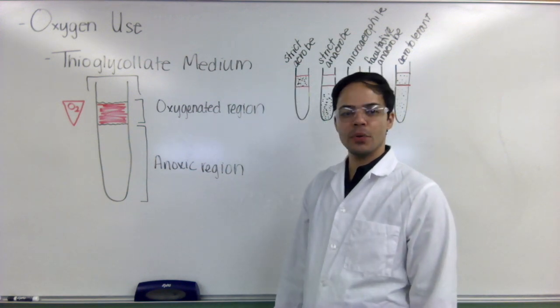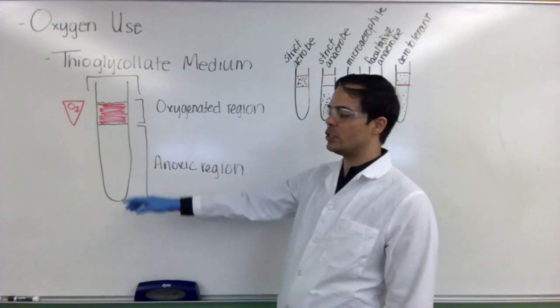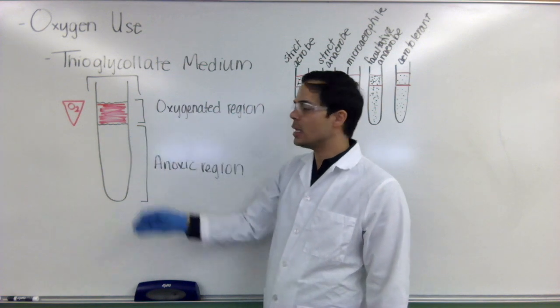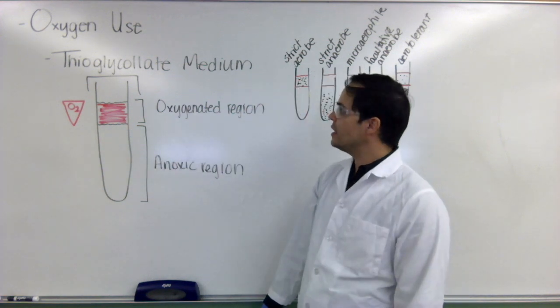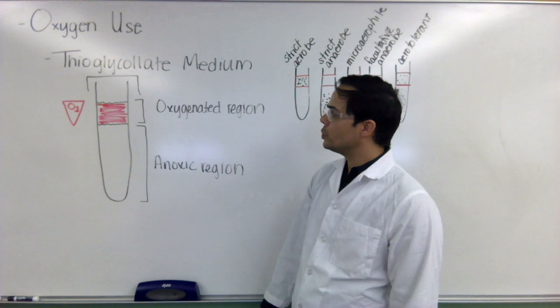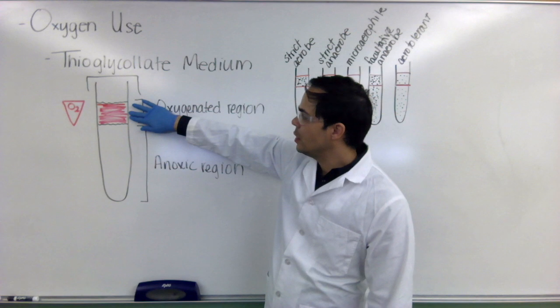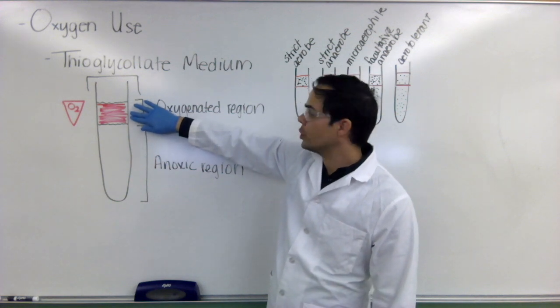The other ingredient that's important here is the resazurin indicator dye that turns red or pink in the presence of oxygen and this allows us to determine which parts of the tube are oxygenated and those parts will turn red.